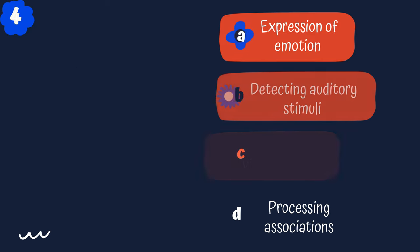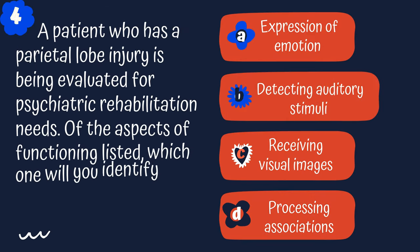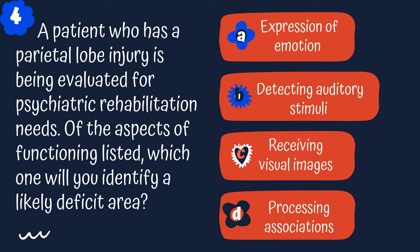Question 4. A patient who has a parietal lobe injury is being evaluated for psychiatric rehabilitation needs. Of the aspects of function listed, which one will you identify as a likely deficit area? A. Expression of emotion. B. Detect an auditory stimuli. C. Receiving visual images. Or D. Processing associations.